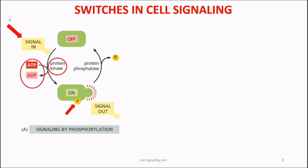The phosphorylated state of the target protein is its active state, and this phosphorylated active protein then carries out a specific function. After some time, protein phosphatase cleaves off the phosphate group from the active protein, reverting it back to the inactive form.